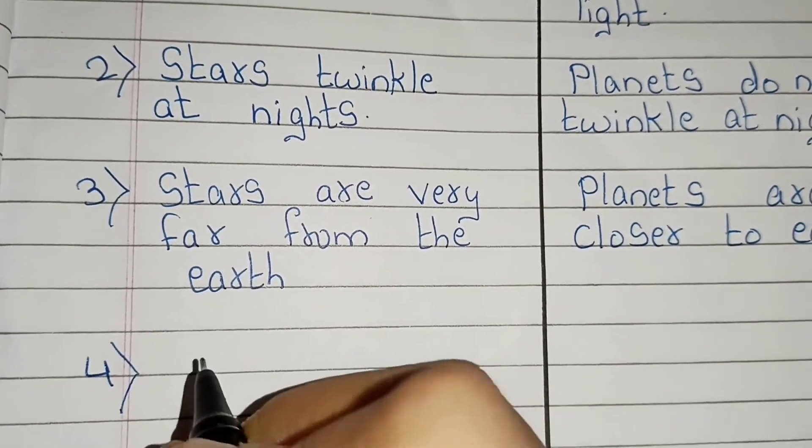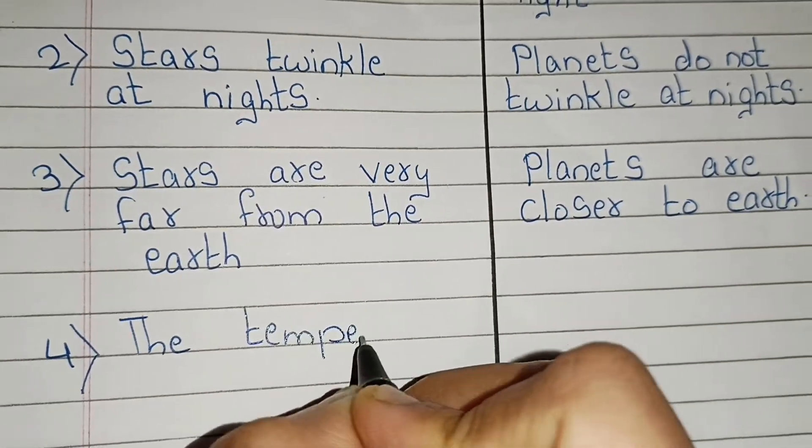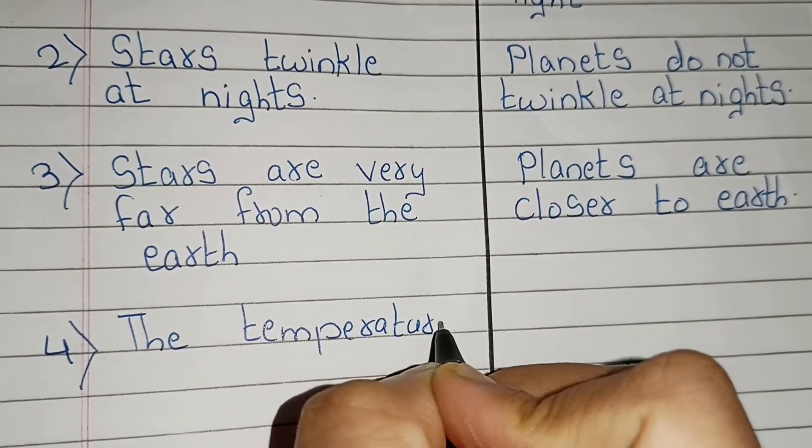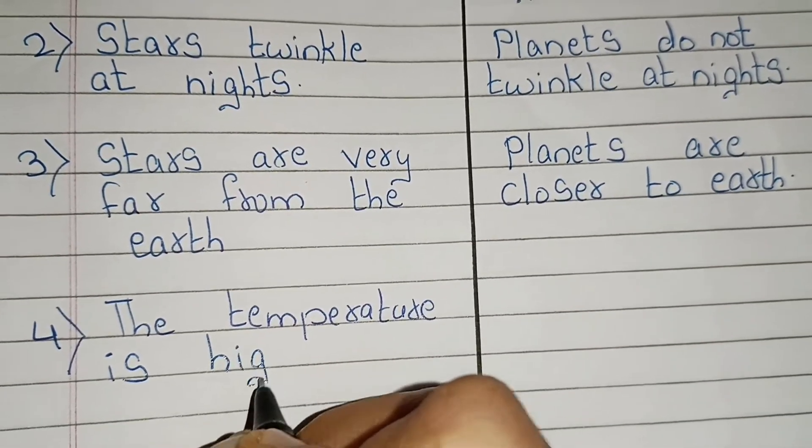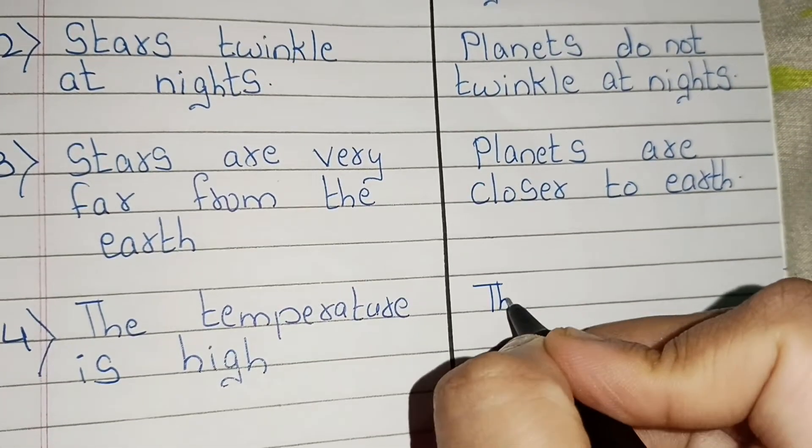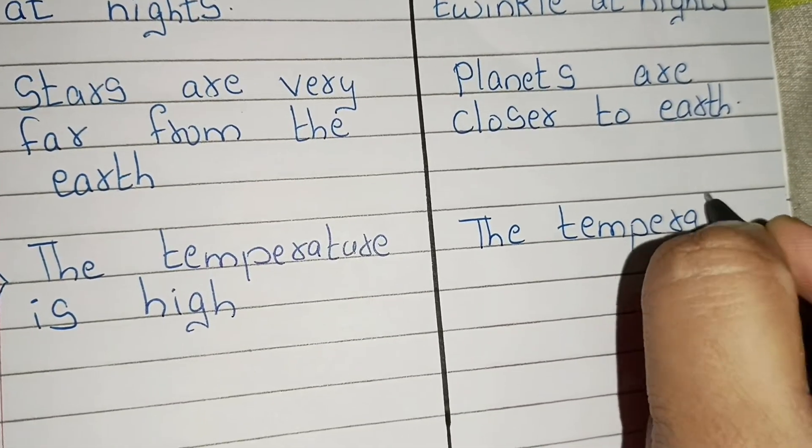Point number four. The temperature of stars is high. The temperature of planet is low.